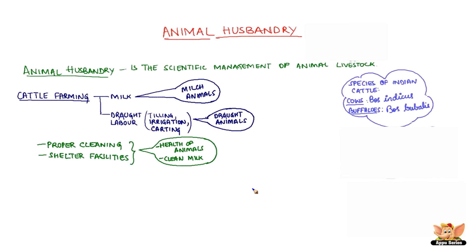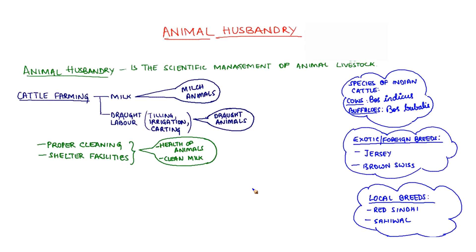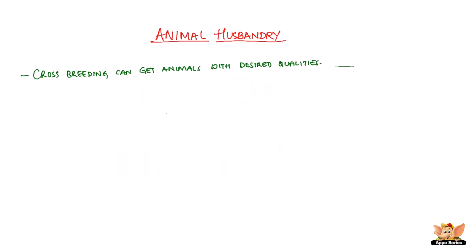Indian cattle are of two species: cows and buffalos. Local breeds like Red Sindhi and Sahiwal, which are resistant to diseases, and exotic breeds like Jersey and Brown Swiss, which provide sufficient milk, can be cross-bred to get cattle with both these qualities.